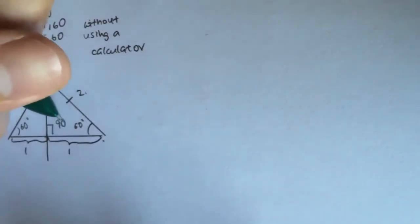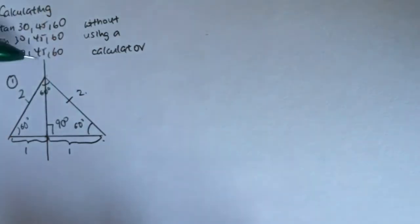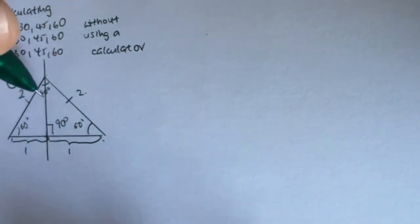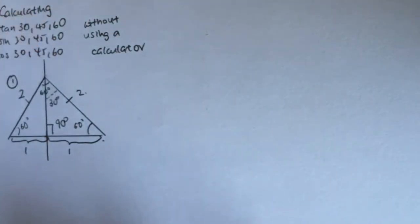This angle here will be 90 degrees, since this line is a perpendicular bisector, and this angle will be 30 degrees.